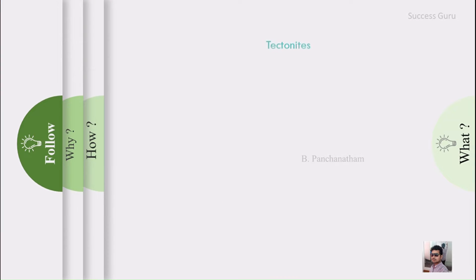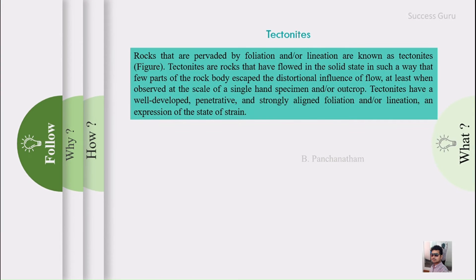So what is a tectonite? Rocks that are pervaded by foliation, lineation, or both are known as tectonites. If you find a rock with oriented minerals in a line-like structure, that is called a lineation. If minerals are aligned in a planar, two-dimensional structure with both length and width, that is called a foliation.